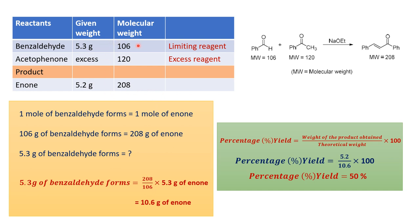We can also convert this quantity into moles. If 106 grams is equal to 1 mole, then 5.3 grams equals a certain number of moles, and using those mole calculations we can also calculate the yield. Instead of doing double conversions, we can directly equate the weights and get the percentage yield. Thank you. Like and subscribe.